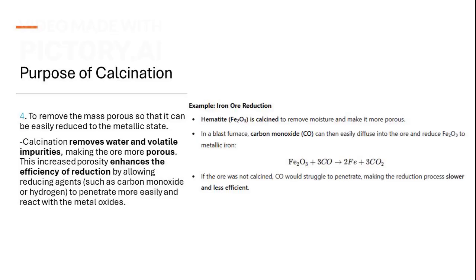By removing water and volatile impurities, calcination makes ores more porous, enhancing the efficiency of iron ore reduction. This process allows reducing agents to penetrate more easily, speeding up metal extraction.